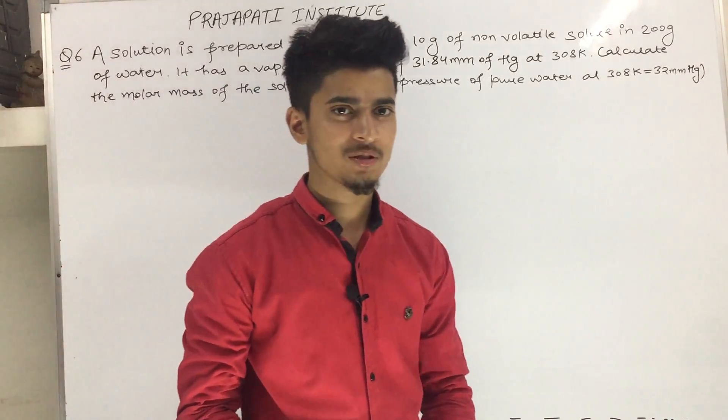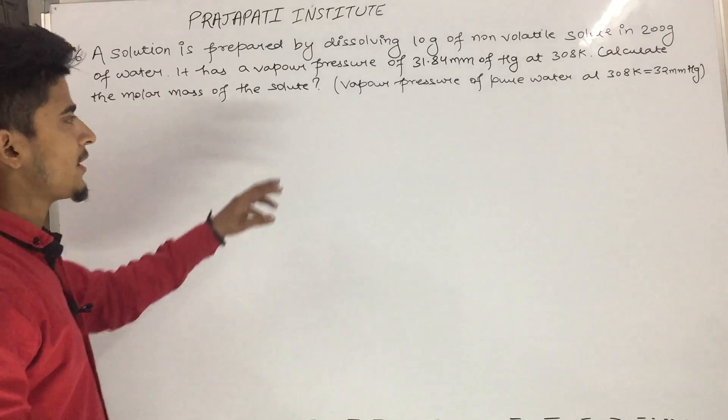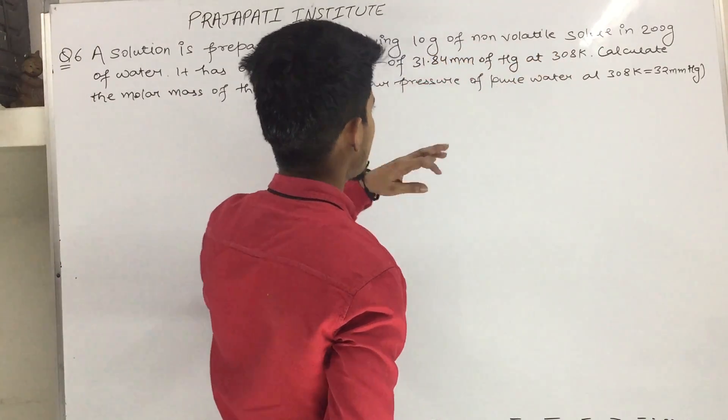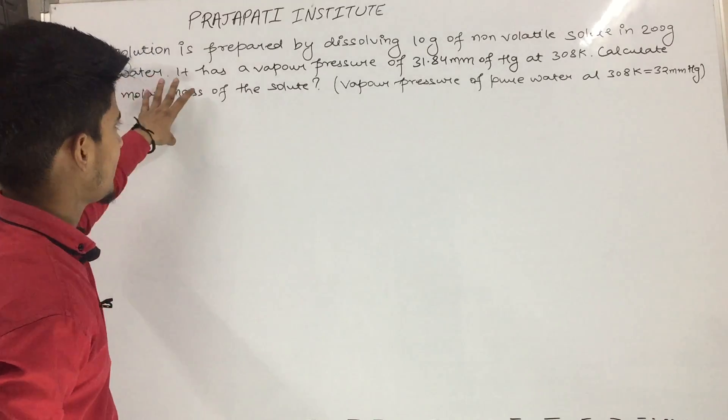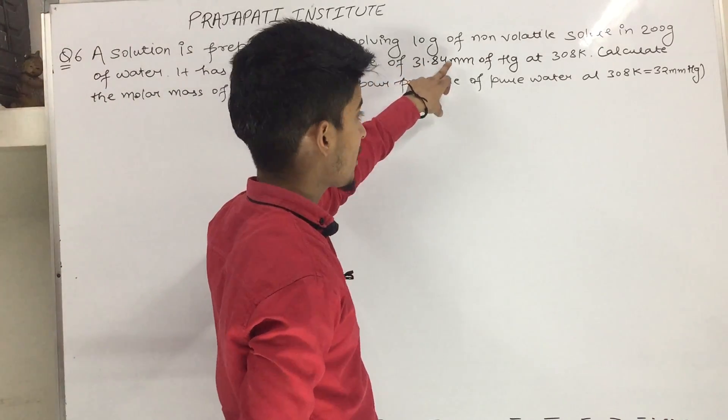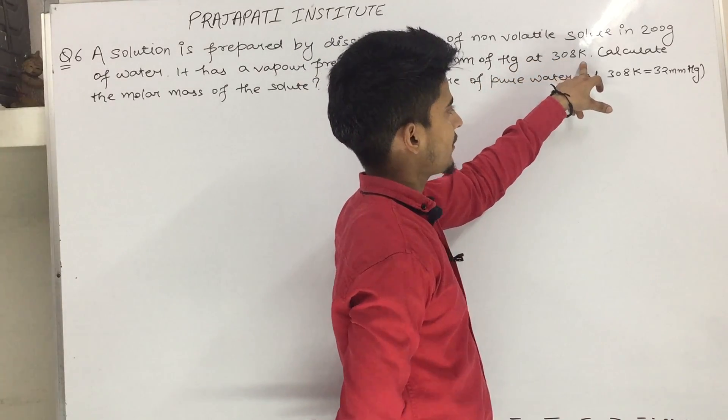Question No. 6, Chapter No. 2. A solution is prepared by dissolving 10 grams of non-volatile solute in 200 grams of water. It has a vapor pressure of 31.84 mm of Hg at 308 Kelvin.